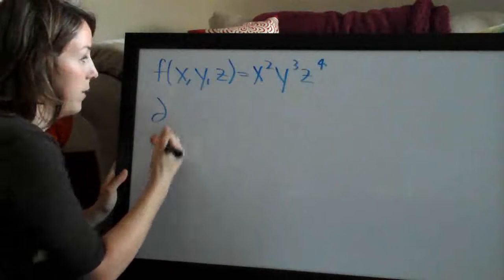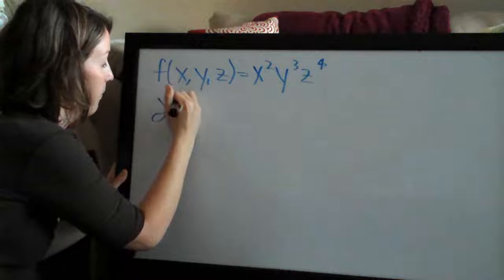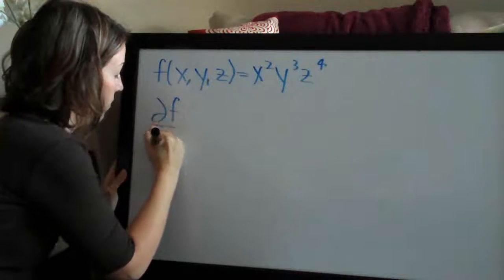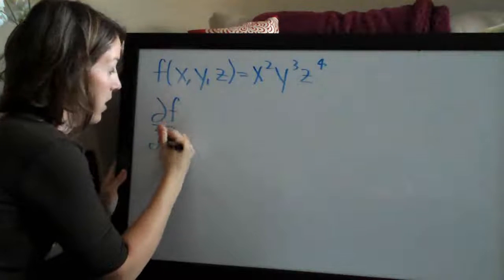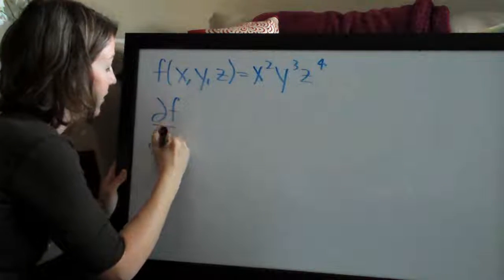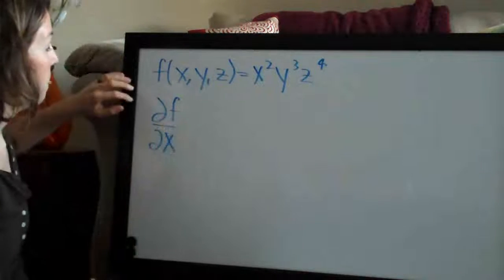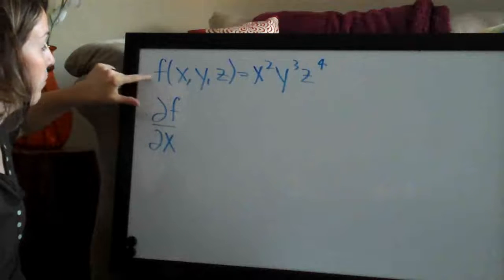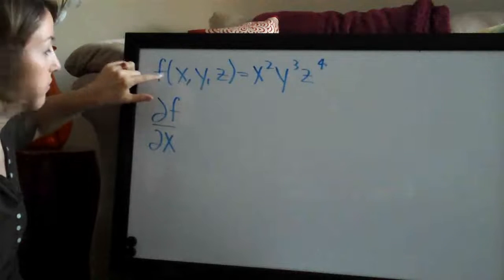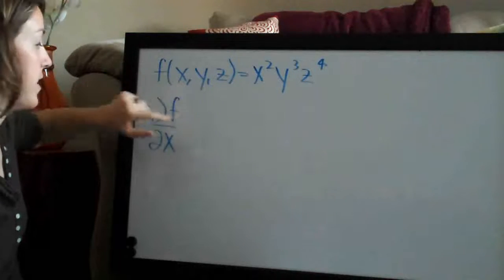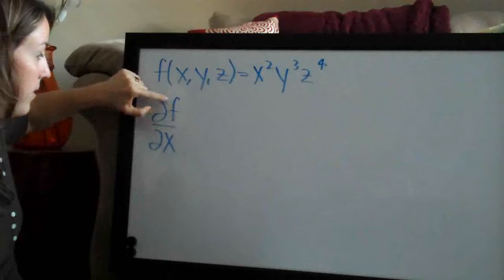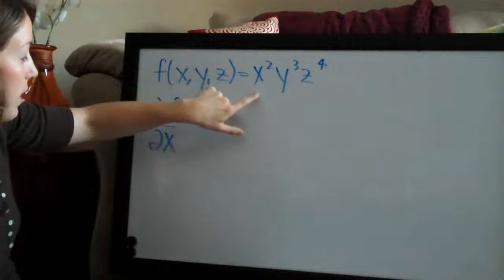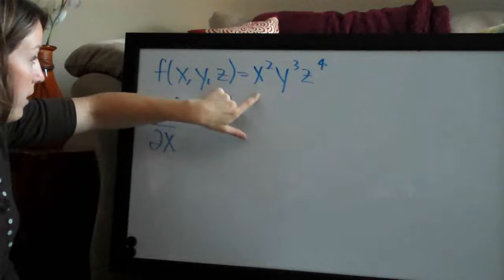This weird squiggly thing, f, the weird squiggly thing, x. So f you get from here — so if this is h(x, y, z), then this becomes an h — and then x is the first variable we're going to do.